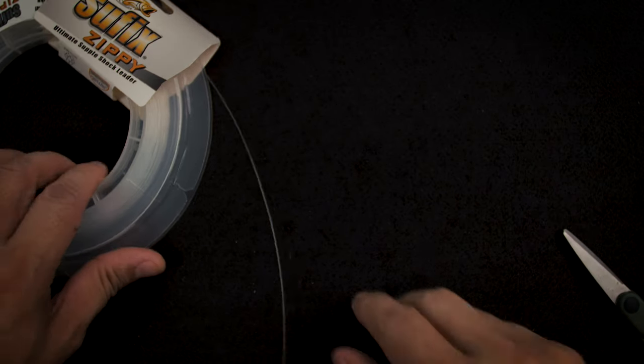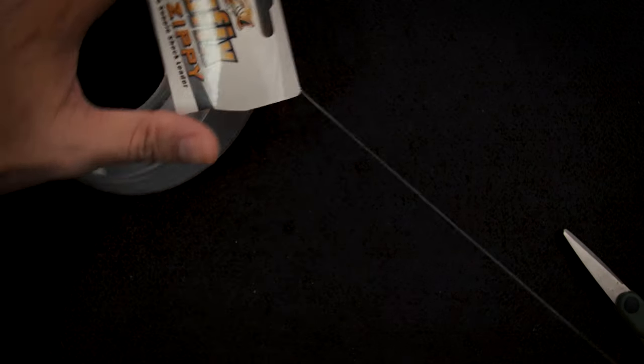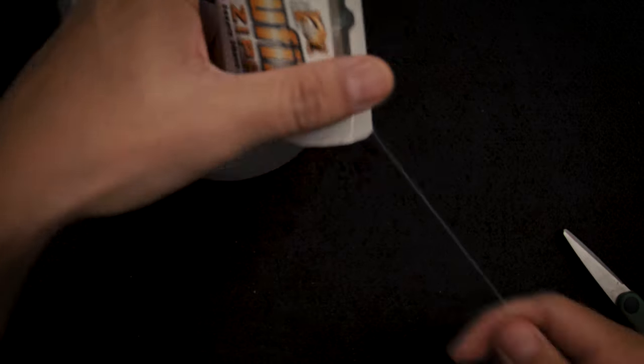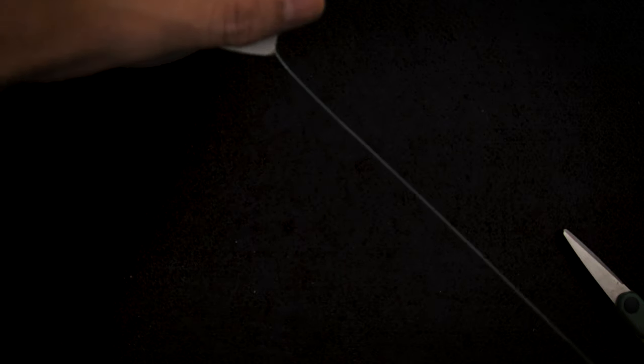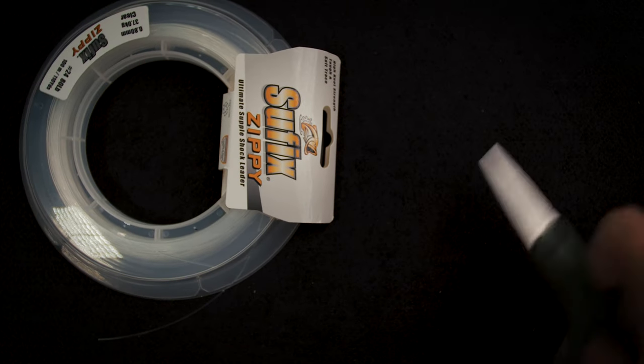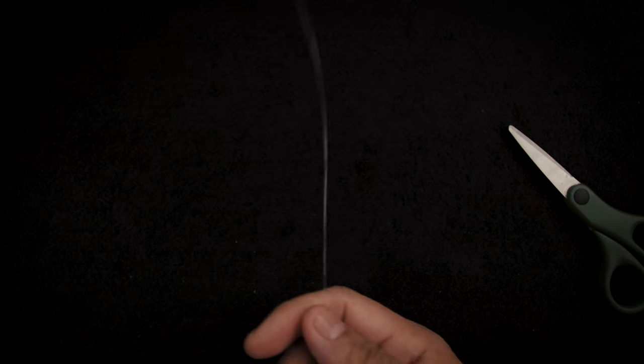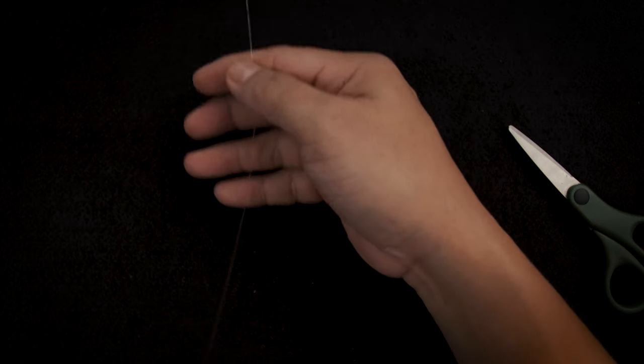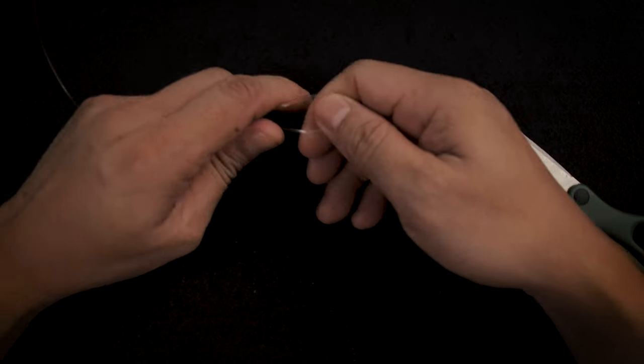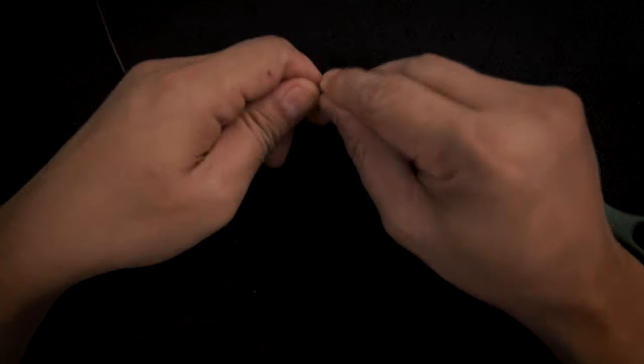Our main would be Suffix Zippy. It's a bit softer. I'm going to be cutting about a meter and a half. This will be going to my main line on my leader, main leader, shock leader, or my braid. I'll get about a meter or half a meter from the bottom.